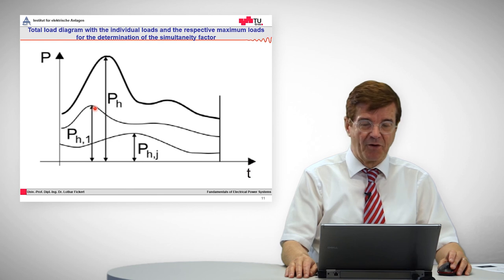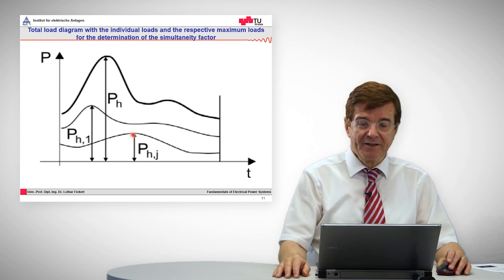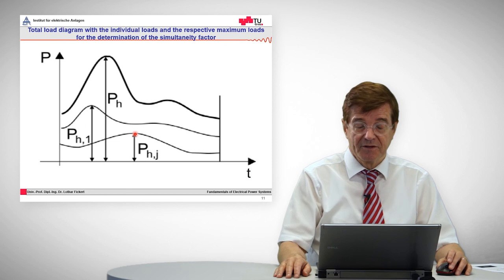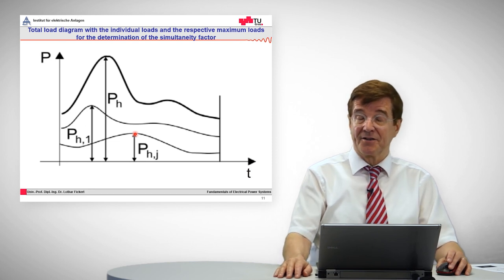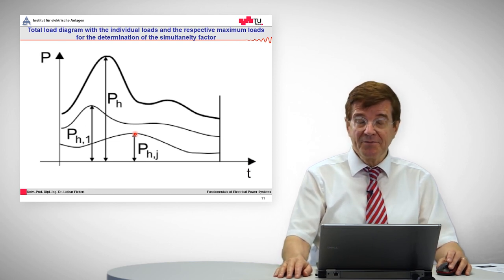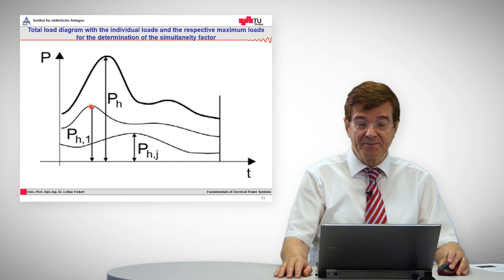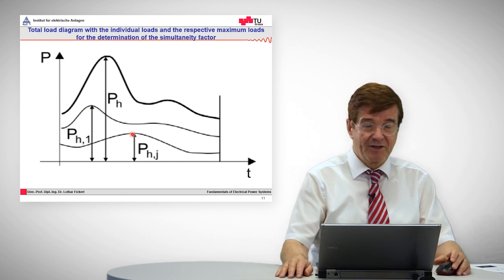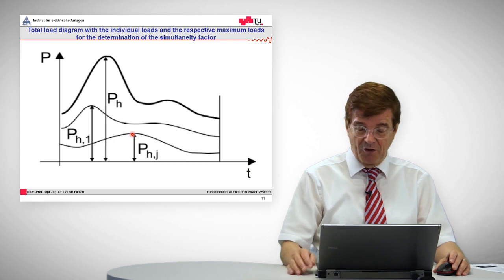another load that has the peak during the daytime, if these are superimposed, the maximum peak is less than the sum of this peak and this peak. So this leads to the coincidence factor which is always below one.